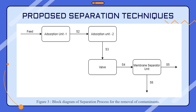For the proposed separation techniques, as shown in the block diagram: first, the feed enters absorption unit 1 to remove water vapor; then it enters absorption unit 2 to remove hydrogen sulfide; then it passes through a valve to decrease the pressure from 70 to 25 bar; and then it enters the membrane separator unit. The purified methane gas will be the final product achieved in this process.